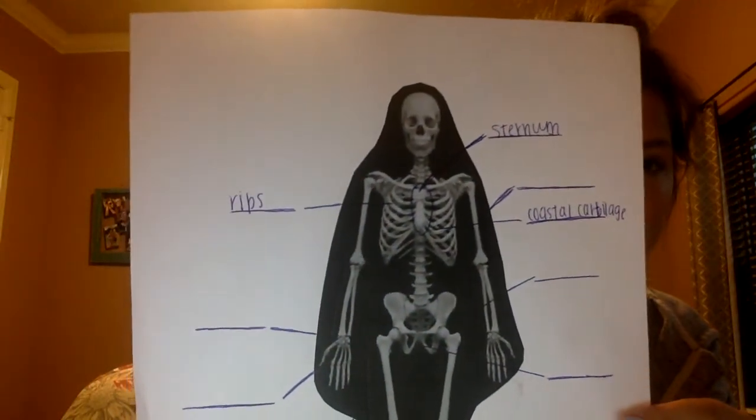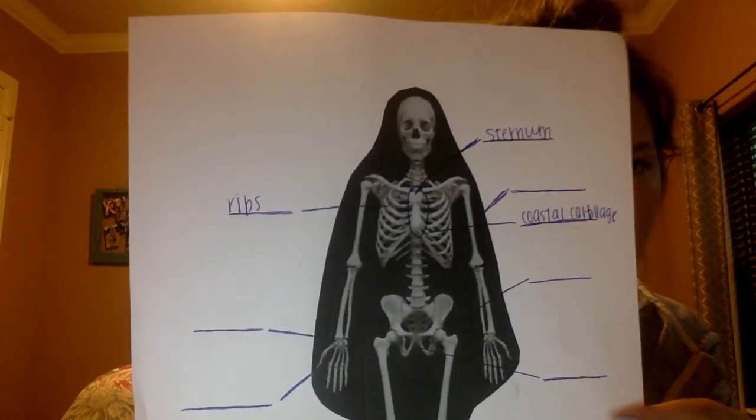The costal cartilage kind of looks like the ribs, but it's almost like the inner portion of our ribs. And then the lower ribs are our false ribs, which are not directly attached to our sternum. The last part of the axial region I'm labeling is the coccyx, which belongs to our vertebral column, also known as our spine. You can barely see it in this dark picture.